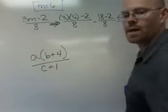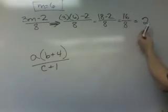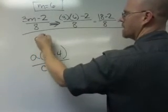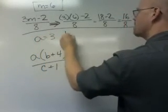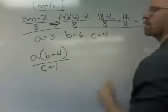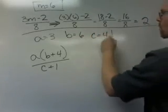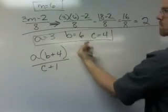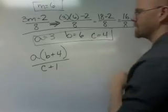Another example right here: let's suppose a is 3, b is 6, and c is equal to 4. So this means wherever I see an a I'm going to replace it with a 3, wherever I see a b I'm going to replace it with a 6, wherever I see a c I'm going to replace it with a 4.